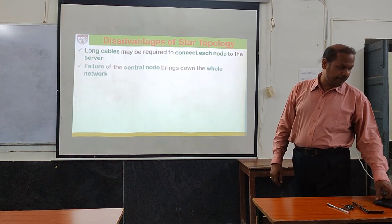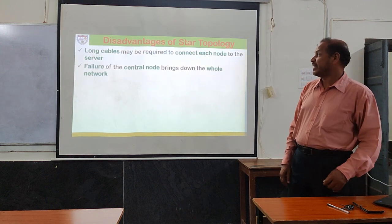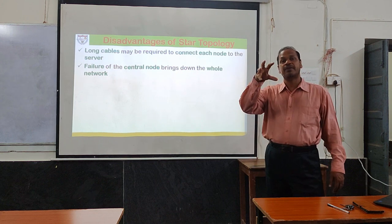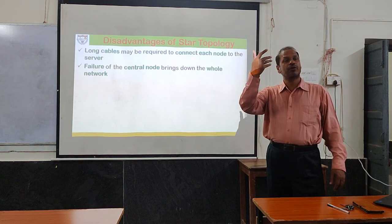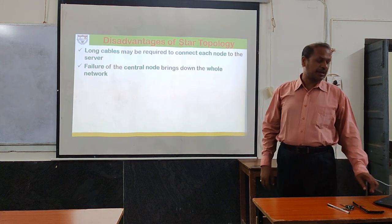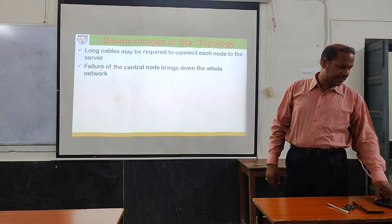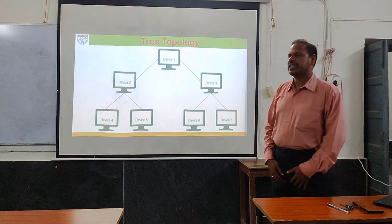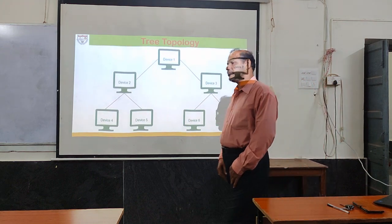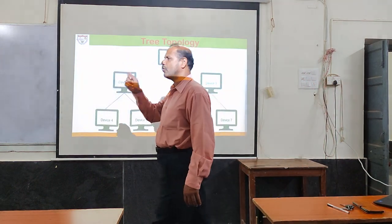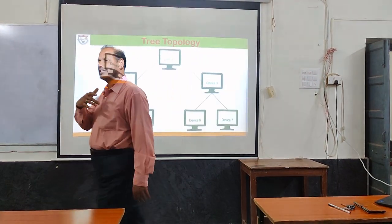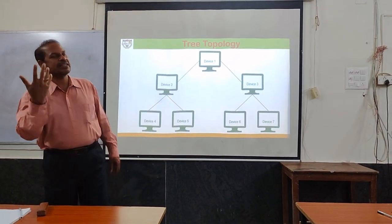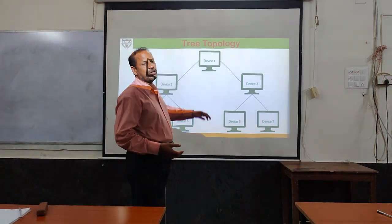The advantages of star topology are: a failure in one node does not affect the whole network, unlike bus or ring topology; and troubleshooting is easier since faults can be detected at the central hub. Simple access protocols can be implemented. The disadvantage is that if the hub fails, the entire network collapses.